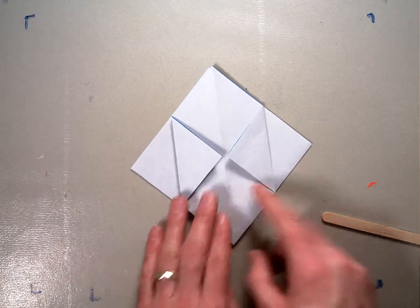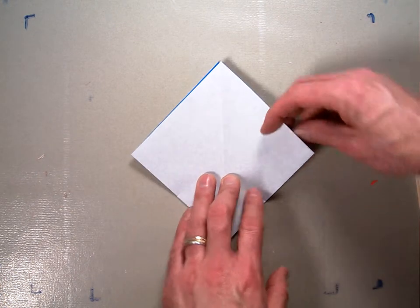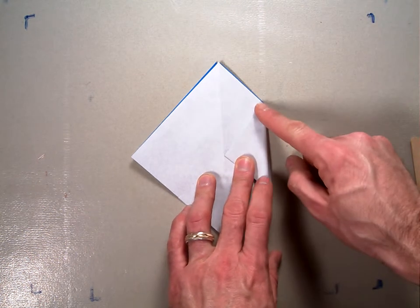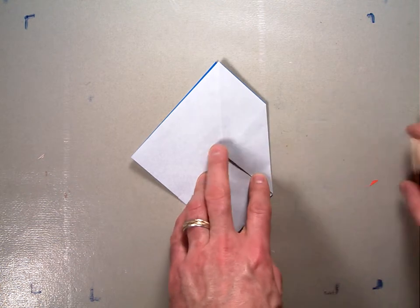Now take your model, flip it over, and repeat that step. So you're going to take this corner, fold it in towards the center, and try your best to make it so that these lines, the one on the front and the one on the back, are matching.